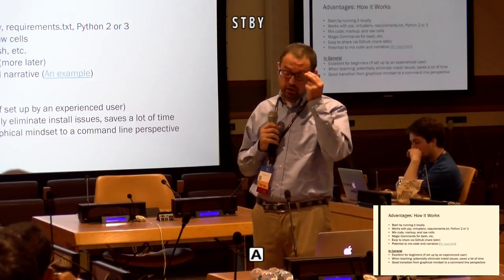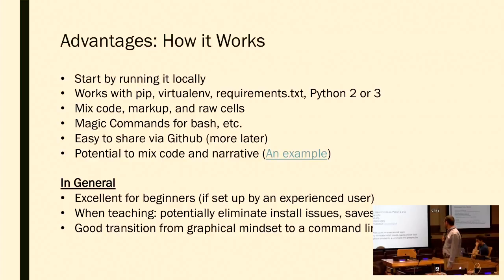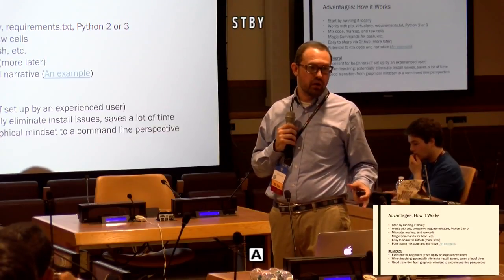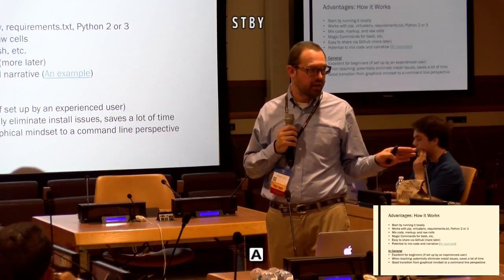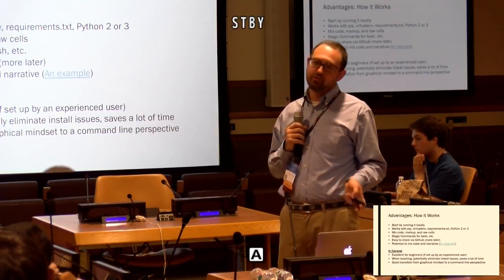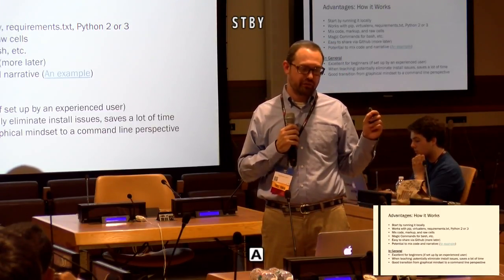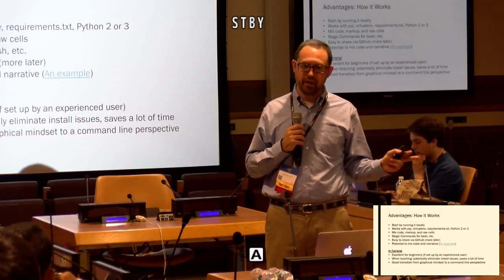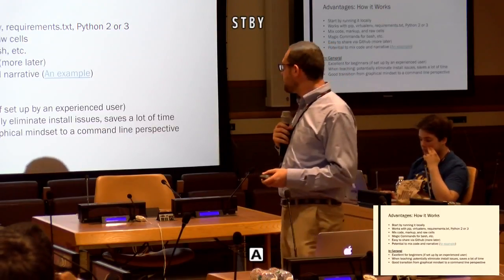For the most part, you start by running it locally. It works with pip install — pip install Jupyter — you start up a virtual environment, have a requirements.txt file, and then run the notebook server. Once you're in Jupyter, you can have different cells: either straight Python code, markdown, or raw cells with any kind of raw text or code. You can also use magic commands — one cool thing is you can use a small flag and write bash instead of Python. So if the Python way of doing something is a lot of work and the bash way is one line of code, you just switch back and forth. That's a very cool feature.